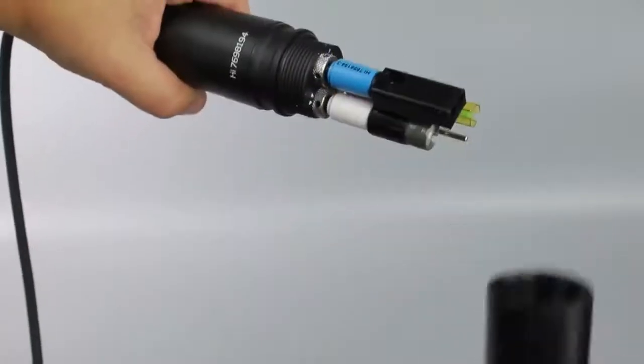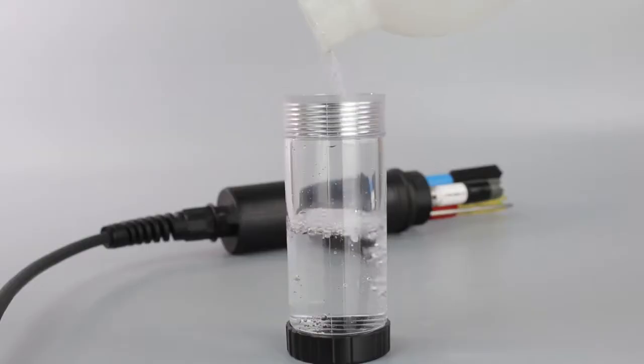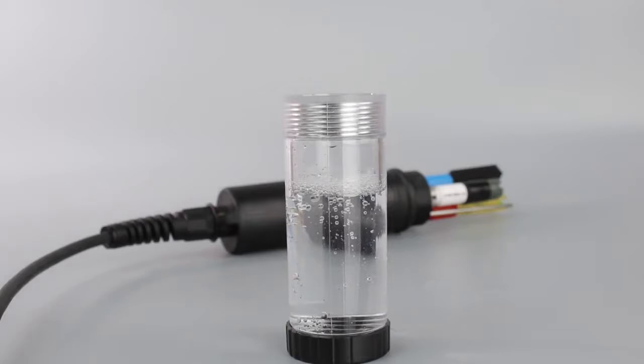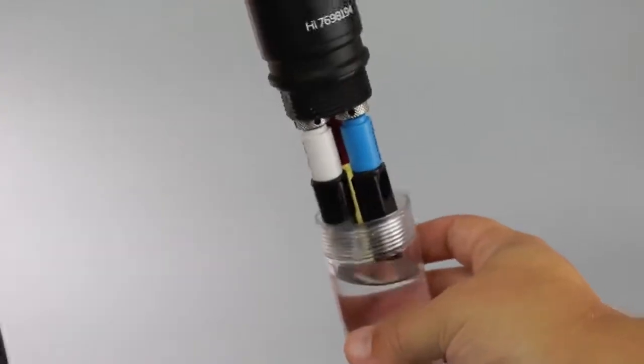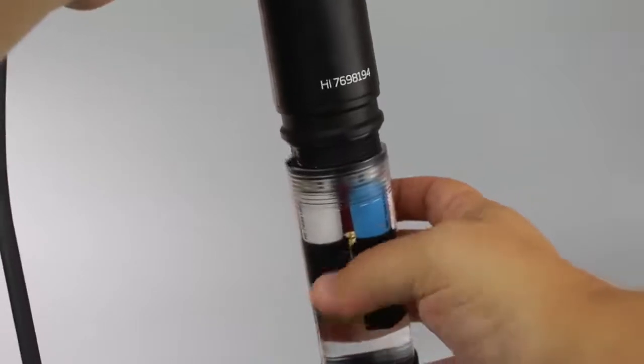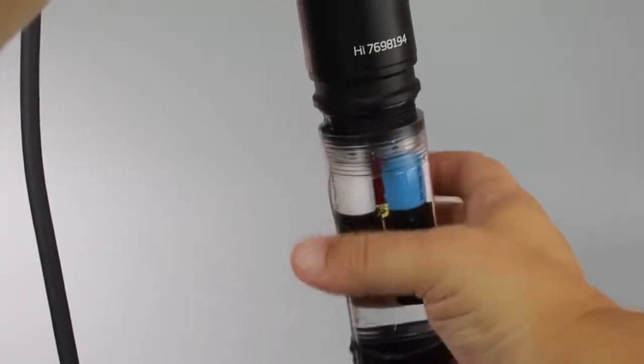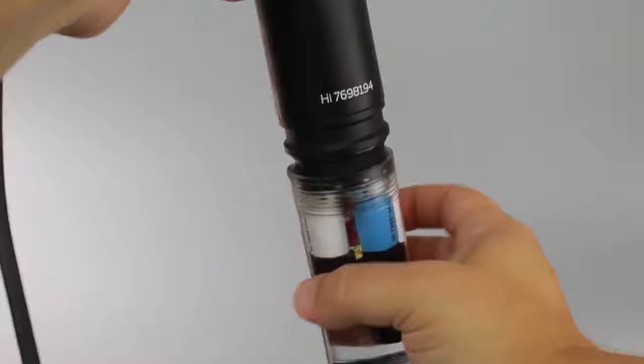To calibrate, remove the protective shield from the probe. Fill the supplied calibration beaker two-thirds of the way with your HI-9828 calibration solution. Submerge the sensors into the beaker and then screw the beaker onto the probe body. Don't worry if some solution overflows.